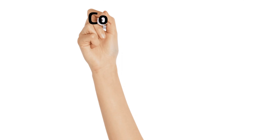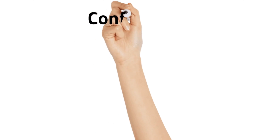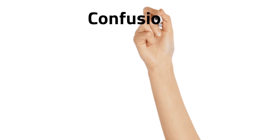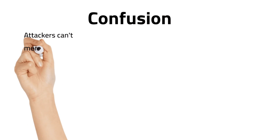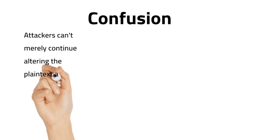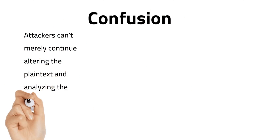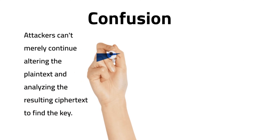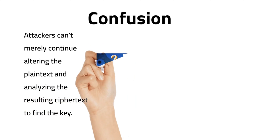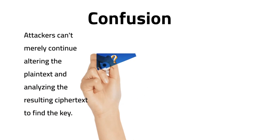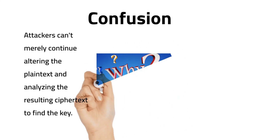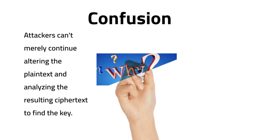Let's see what confusion is first. In this, an attacker tries to find out the key by altering the plain text message and analyzing the resulting cipher text message. This process becomes more difficult for the attacker.